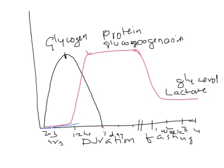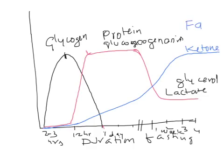As more and more fat enters the liver, beta oxidation increases and more acetyl-CoA is produced. When the TCA cycle becomes saturated, acetyl-CoA is diverted towards ketone body formation. The blue line on the graph shows the rise of ketone bodies in the blood as fasting and starvation progress. Ketone bodies come from triacylglycerol stored in adipose tissue.